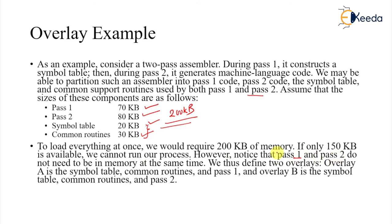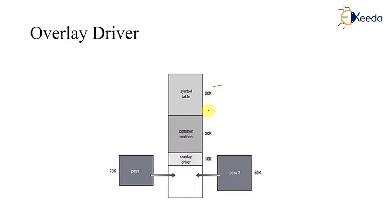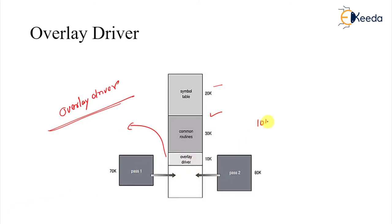We notice that pass one and pass two do not need to be in memory at the same time. So we design our program such that all modules are not required simultaneously. We define two overlays: Overlay A as the symbol table, common routines, and pass one; and Overlay B as the symbol table, common routines, and pass two. An overlay driver takes care of enabling pass one and pass two as needed, requiring only an extra 10 kilobytes.